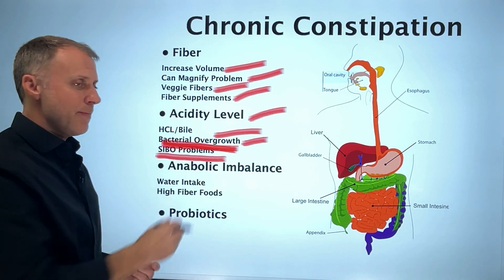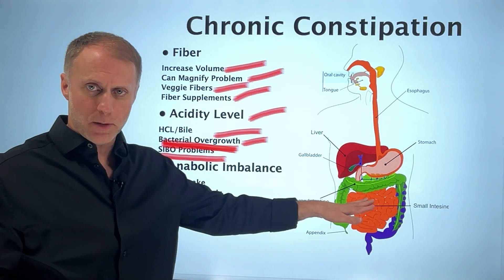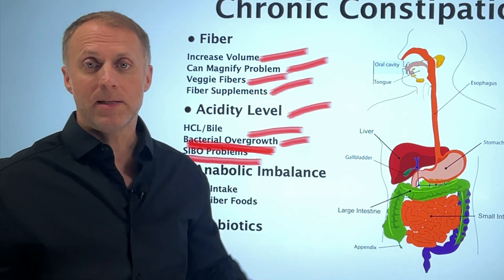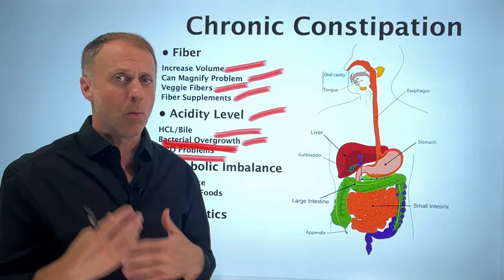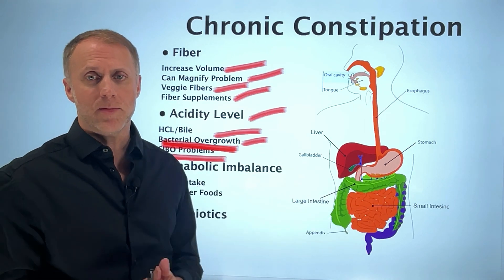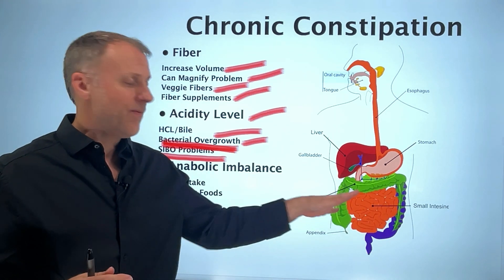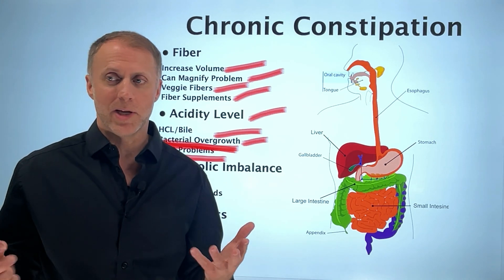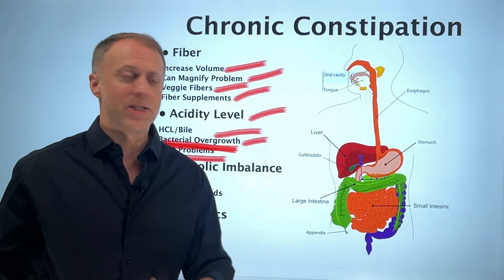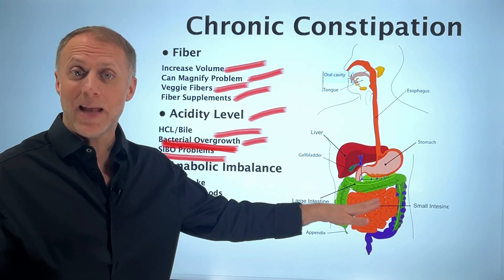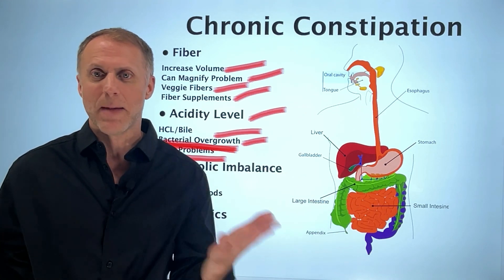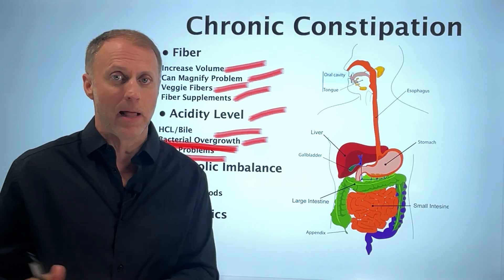And if you have SIBO problems, which is small intestinal bacterial overgrowth, where the bacteria has left the stomach and gone down to the small intestine and set up camp there where it should not be, we want good bacteria in the colon, we don't want a bunch of bacteria in the small intestine. So if it's there, some of these bacteria can really thrive on fiber. So here I am going to take my fiber supplement and it's just going to help these bacteria be even happier and create even more havoc.